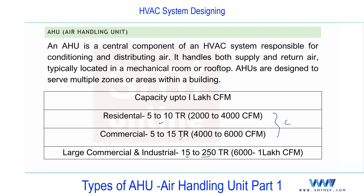Up to 15 TR is available off-the-shelf in the market, but above 15 TR — higher capacity units — should be made to order. Apart from this, the fan capacity will be provided as per our requirement. We need to do the ESP (External Static Pressure) calculation for the fan, so that is made to order. The blower will be changed accordingly as per the project requirement, because connecting the AHU means connecting ductwork, and the duct length can be 100, 200, or 300 feet depending on the project.